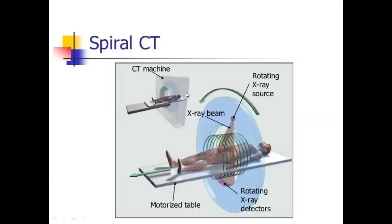This spiral CT scan, also called helical computed tomography, is one in which the source and detector travel along a helical path. You can see here that the X-ray tube and the detector are in the helical path. That is why it is called helical and spiral CT scan.